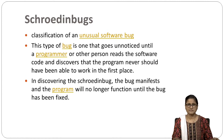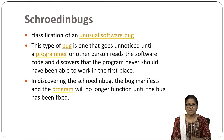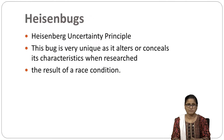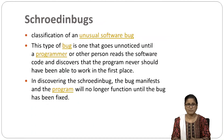The Heisen bug is a software bug that changes or alters its behavior when it is being observed or undergoes isolation. It can refer to any software bug with unusual behavior, particularly when its operation appears to disappear or change when being studied by a debugger application. This type of bug is often the result of a race condition.